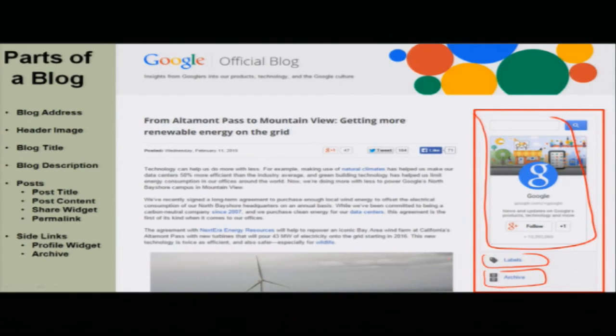These all make up a blog: the blog address, the image, the title, description, posts, and side links. This is the anatomy of a blog.